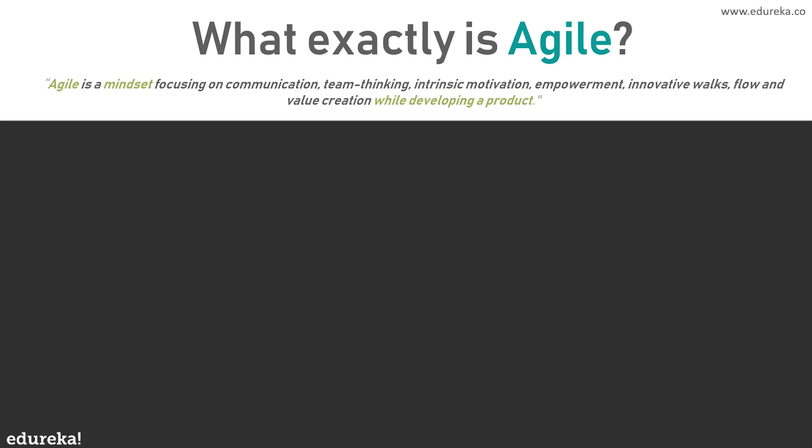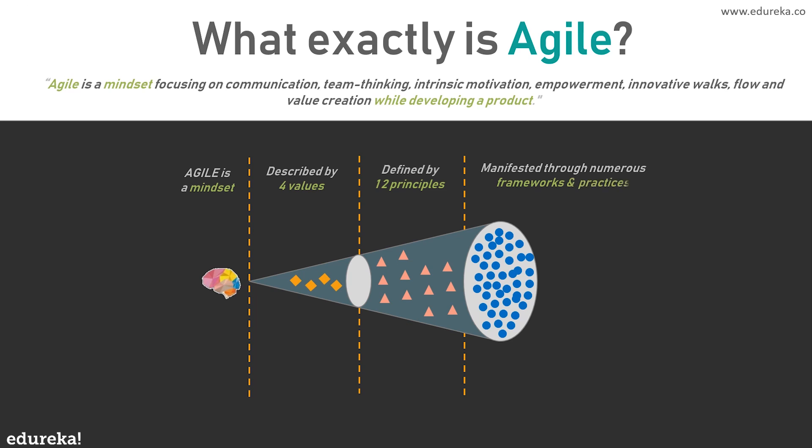At its core, Agile is a set of ideas and actions that keep a software development team organized and efficient. Agile started in about 2001 when a team of software developers got together in Utah for a weekend of skiing, fun, and discussion. That discussion resulted in the creation of the Agile Manifesto, where they compiled their values and principles into a document that's easy to understand and apply. Agile is more of a philosophy and set of values and principles to follow rather than a process to apply to a project — there's no step-by-step formula, just a list of principles. As you can see on screen, Agile is a mindset described by four values, defined by twelve principles, manifested through numerous frameworks and practices, and Scrum is one of those frameworks.